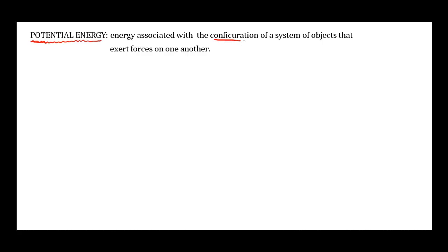Potential energy, which you've learned about before, is energy associated with the configuration of a system of objects that exert forces on one another. That's a very technical, jargony definition, but maybe if we break it down, we can make sense of it.